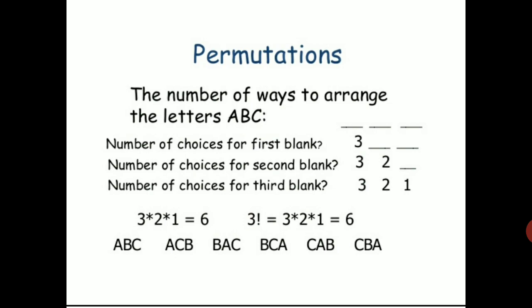The number of ways of arranging n different objects taken n at a time is denoted by nPn, and nPn is equal to n factorial.